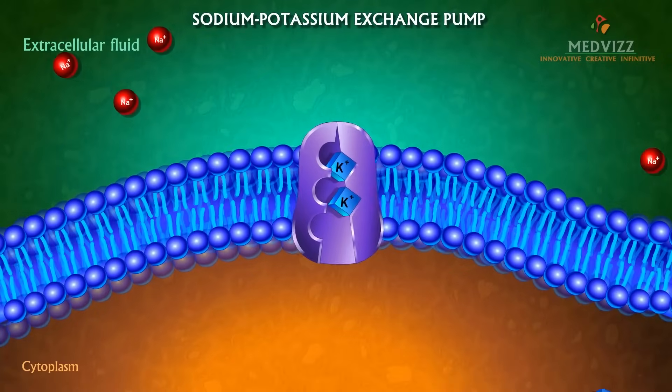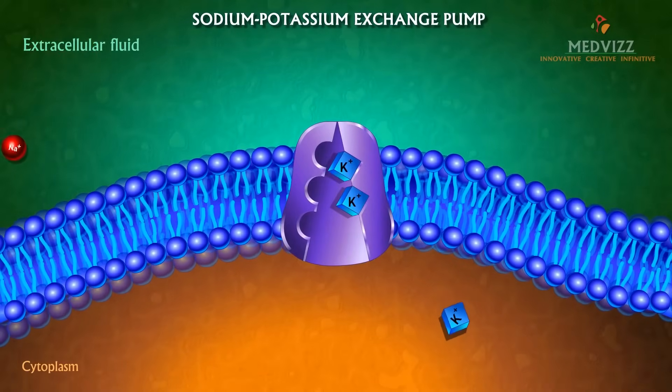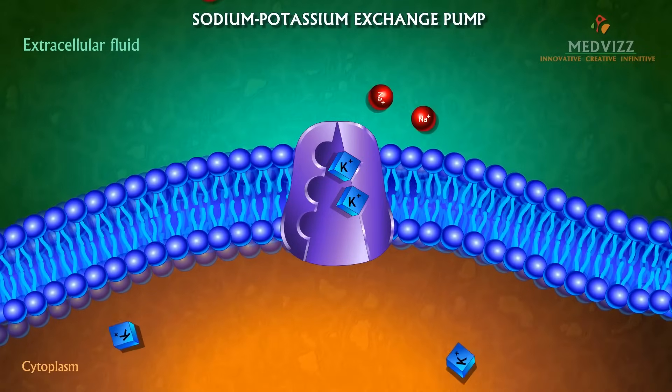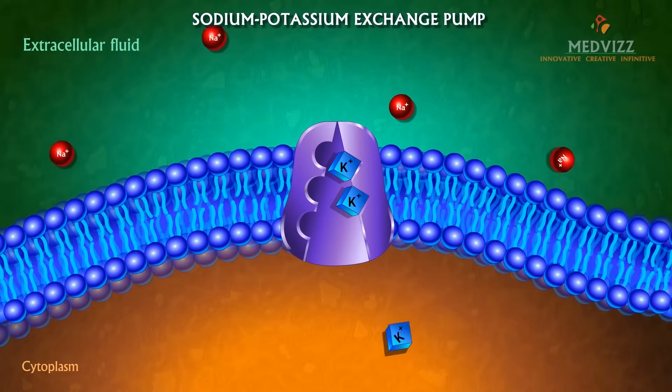The bound phosphate now dissociates and the protein reverts to its original conformation, exposing the two potassium ions to the cytoplasm on the inside of the cell.